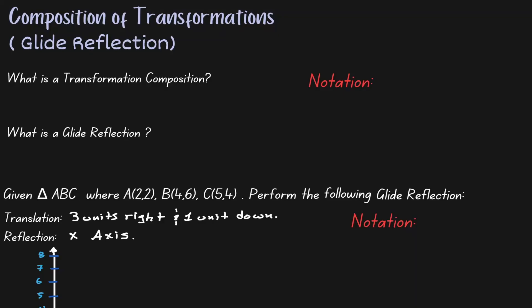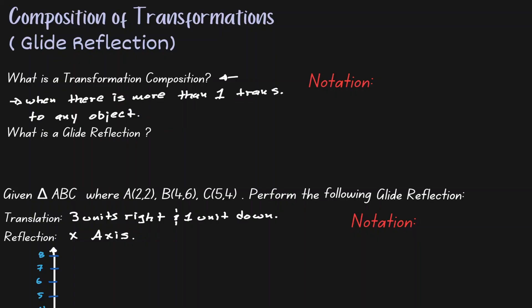Welcome. Let's discuss the idea of composition of transformations by looking at a glide reflection. A transformation composition is when we perform more than one transformation on any object. We can see an example of a transformation composition by looking at a glide reflection, because a glide reflection is when we perform a translation followed by a reflection.